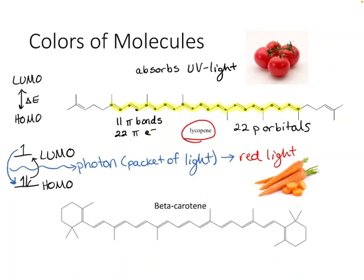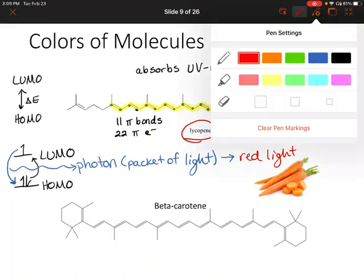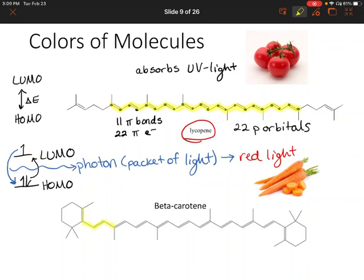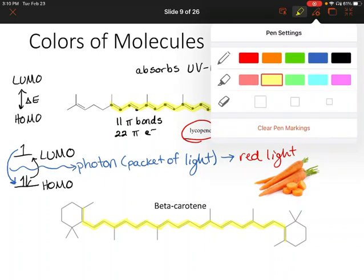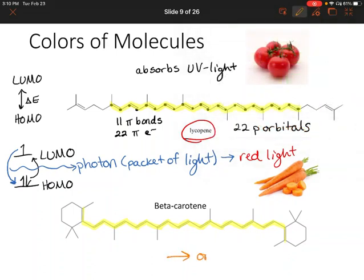Now let's apply that to beta-carotene. Beta-carotene also has a lot of conjugated pi bonds across the molecule — 11 pi bonds again. So that's going to create a really complex set of molecular orbitals, and the energy difference between the HOMO and the LUMO is again very, very small. This molecule absorbs light in the same way, but instead of emitting red light, it emits orange light.